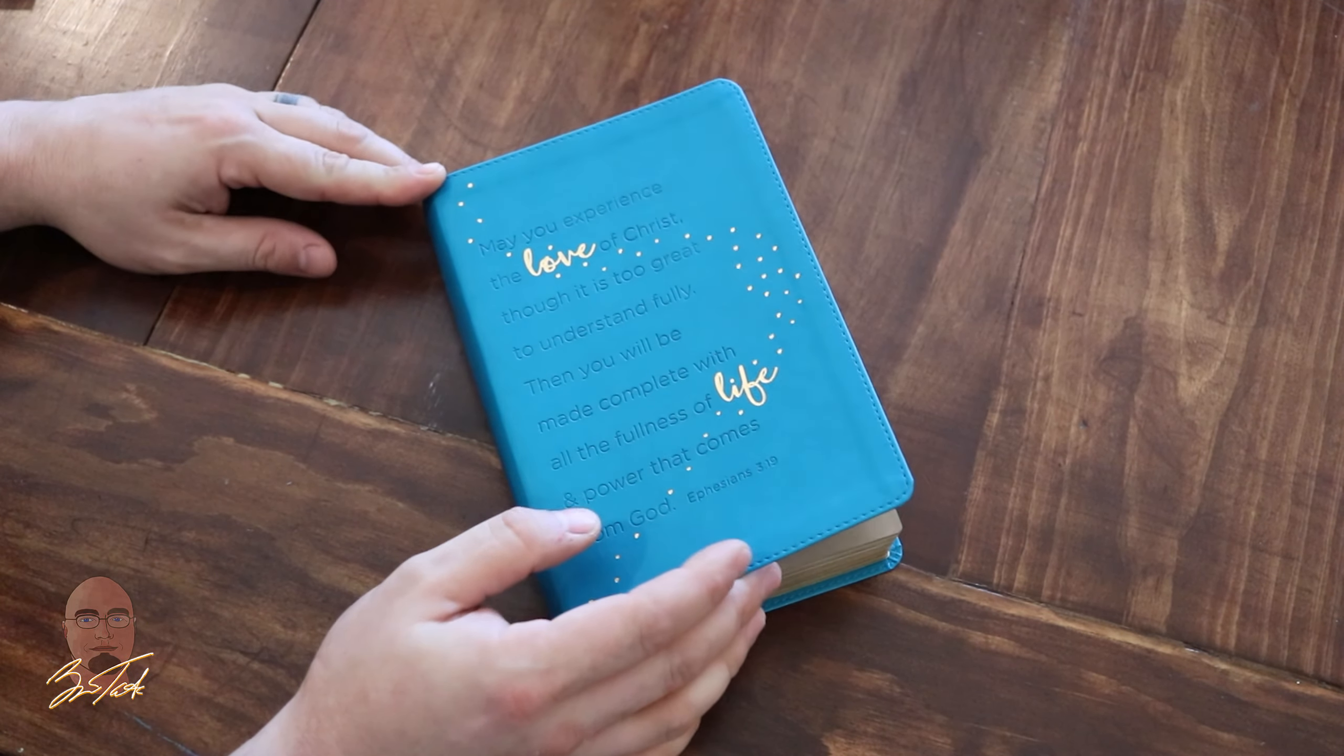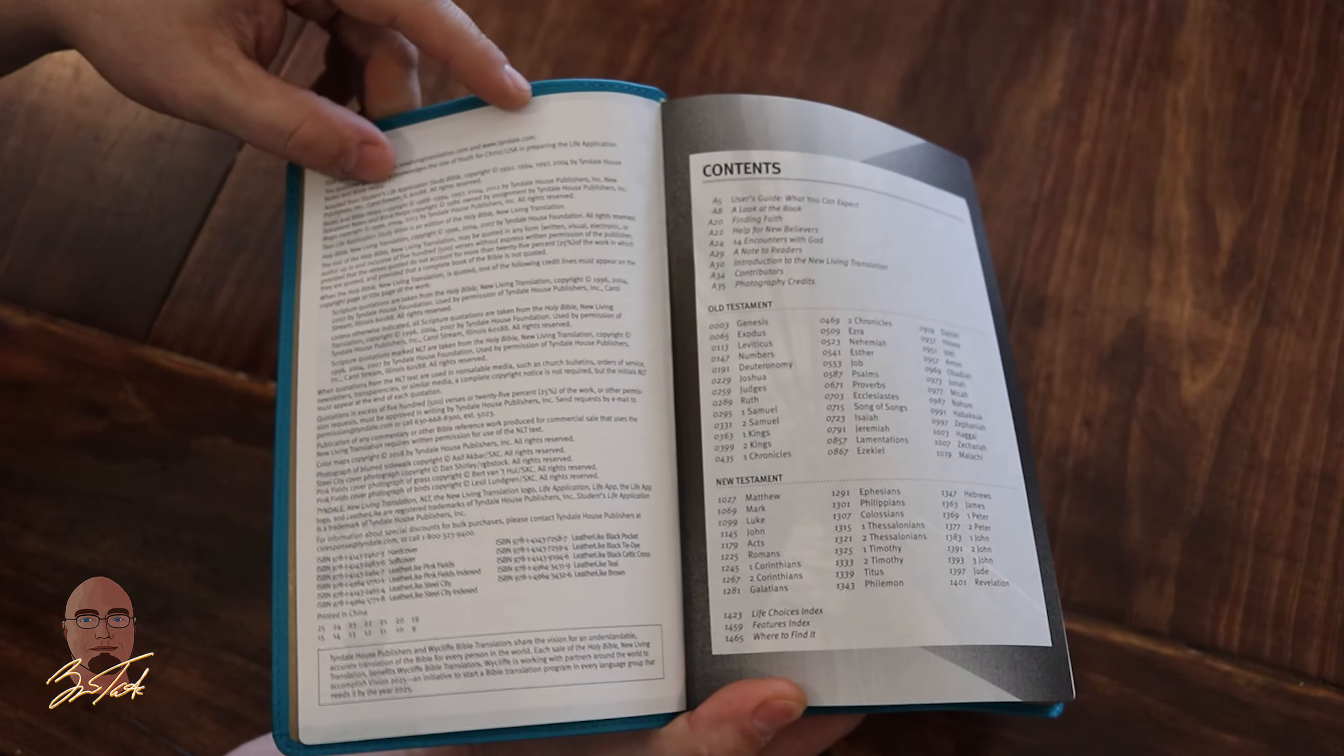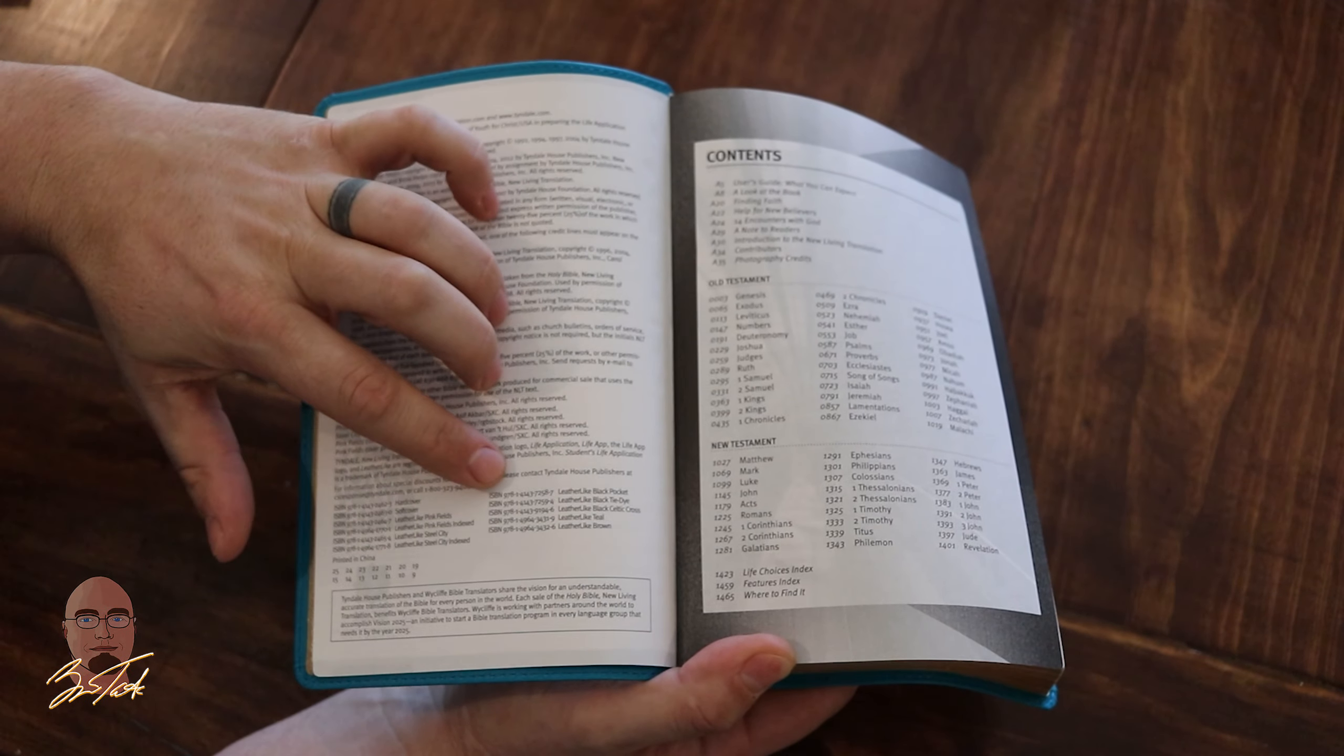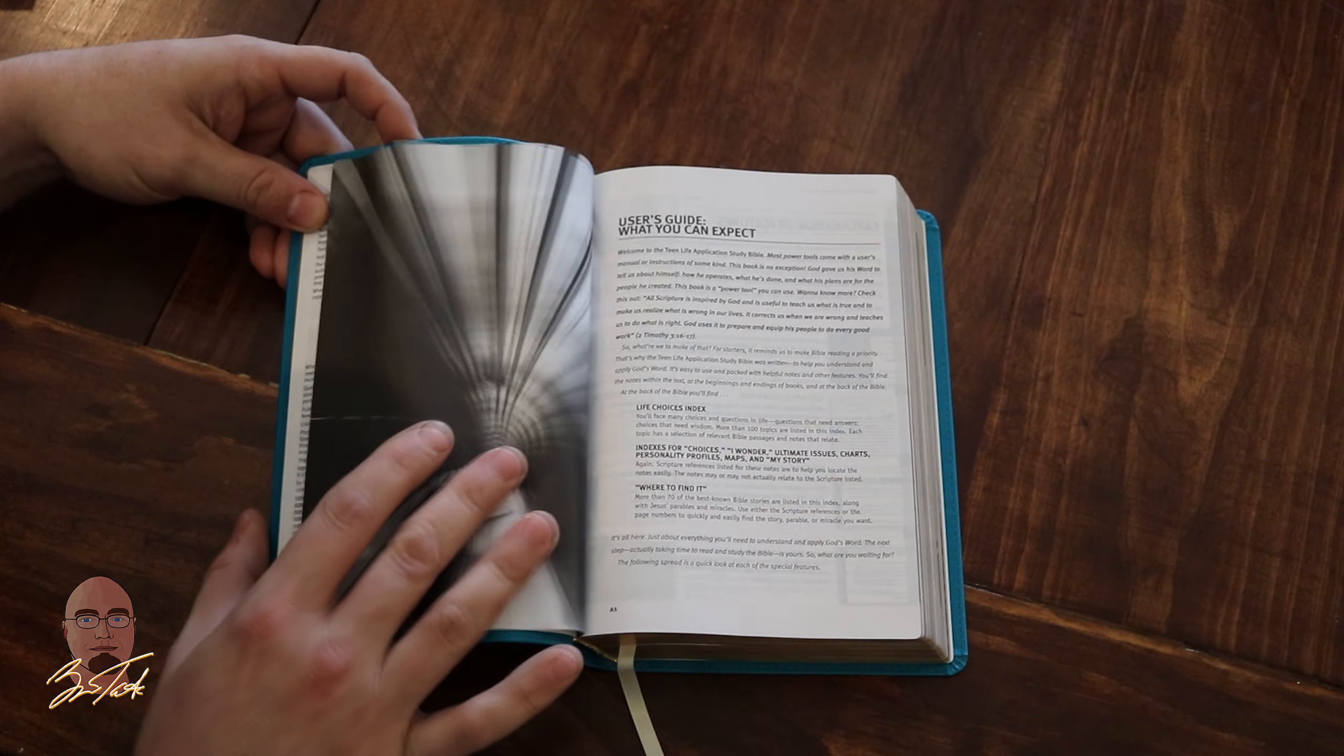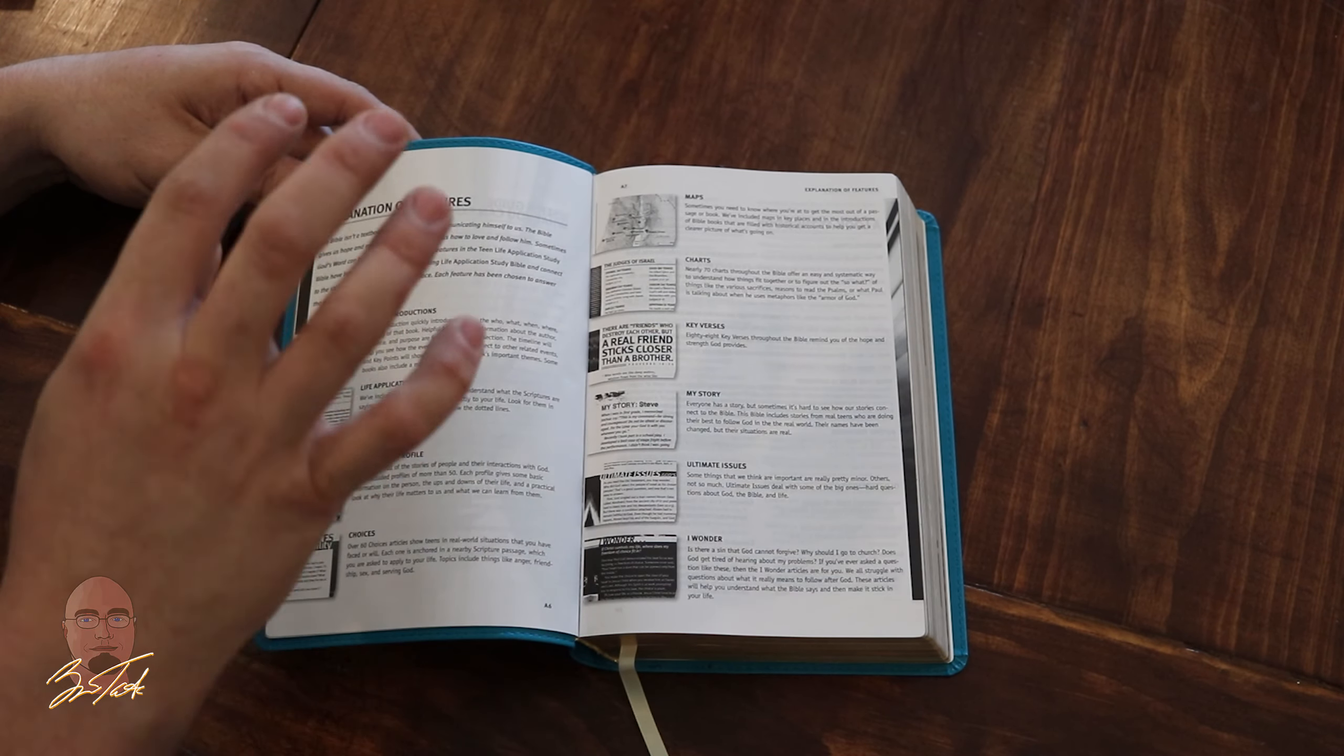Let's take a look inside this edition. You can see the paste-down liner is like a nice tan color. Here's your publication page that shows this is adapted from the Student's Life Application Study Bible from 2004. You can see all the different ISBN numbers there; this is a 2019 printing. You have a contents page and then a user's guide.